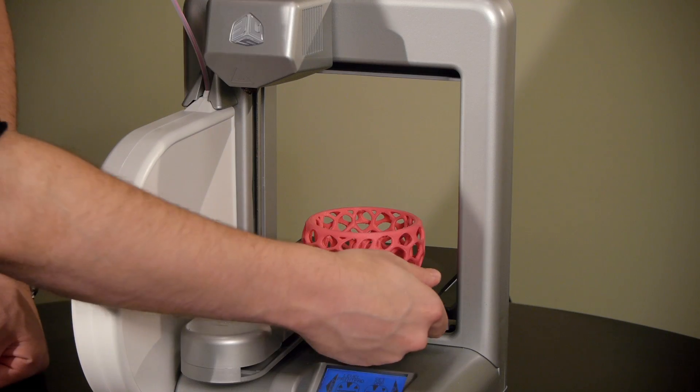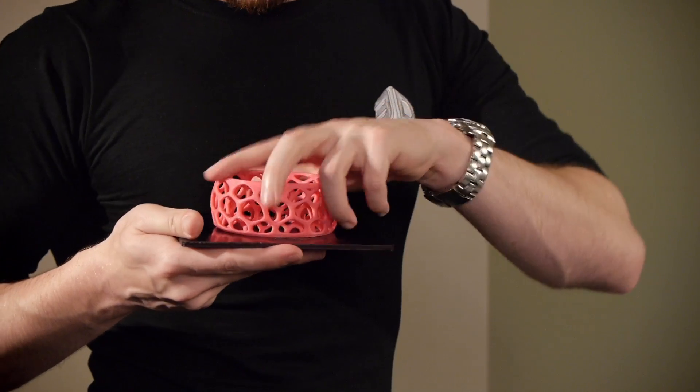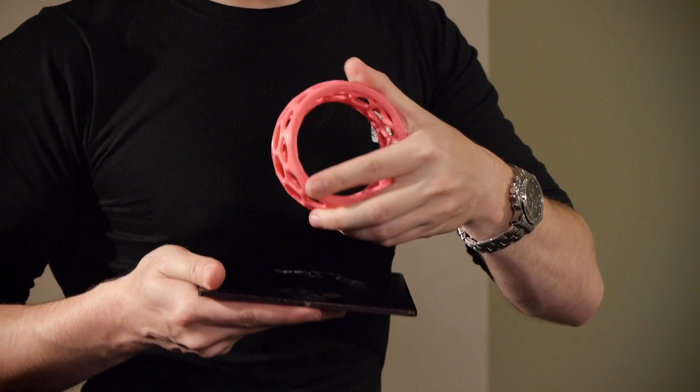Once the print's finished and the pad's cooled off, take it off the cube and dunk it in some water to dissolve the glue. Your piece will pop right off.